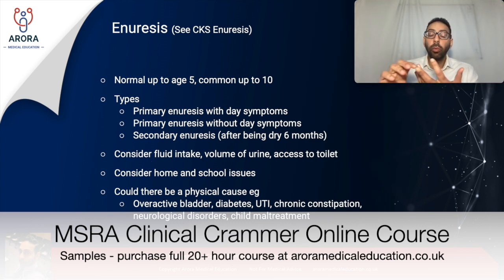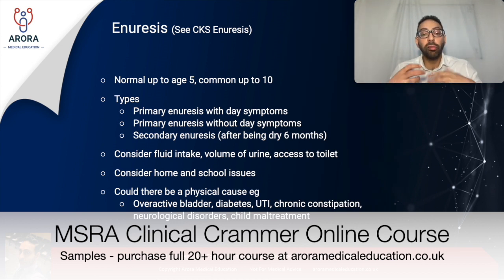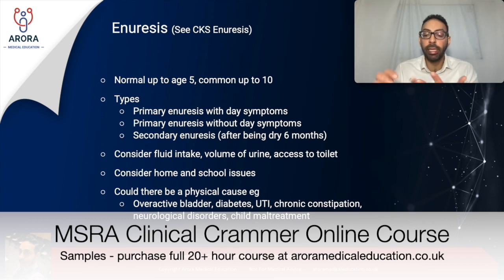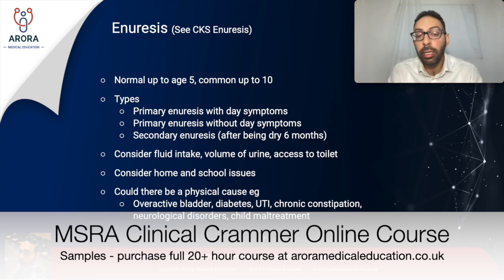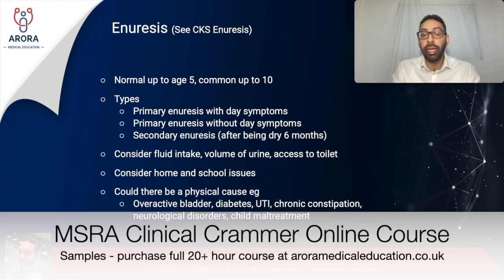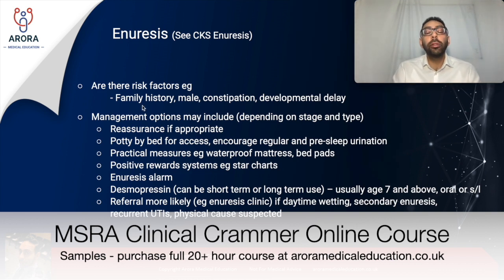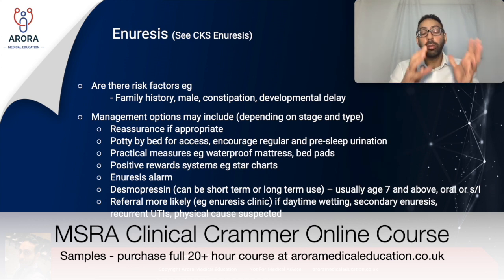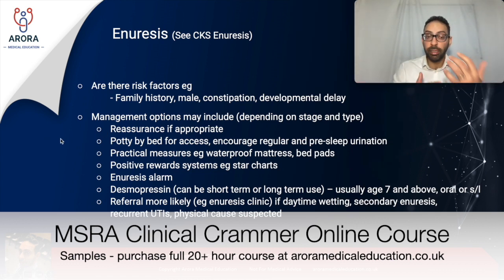Things to consider include the child's fluid intake, volumes of urine passed, access to a toilet, and any school or home issues in the question. Physical causes to consider include overactive bladder, undiagnosed diabetes, UTI, chronic constipation, neurological disorders, and child maltreatment. Investigations like urine dip and culture or blood glucose can rule out physical causes. Risk factors for enuresis include family history, being male, background of constipation, and developmental delay.